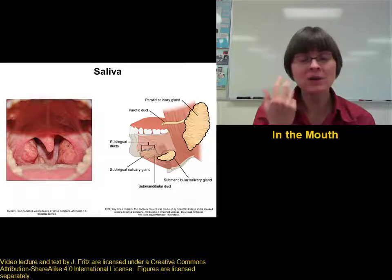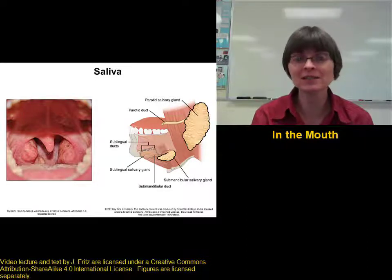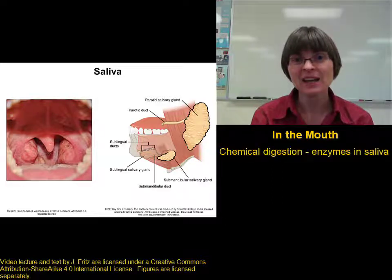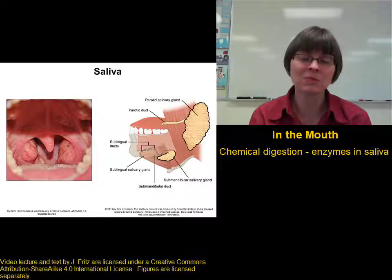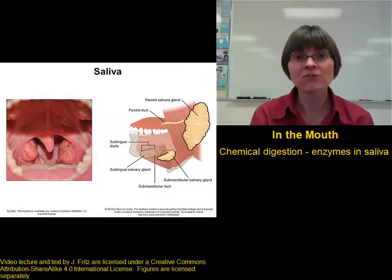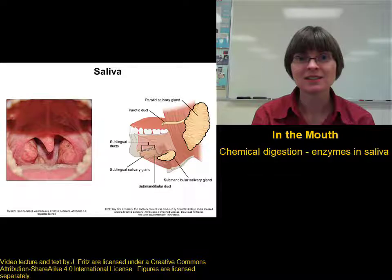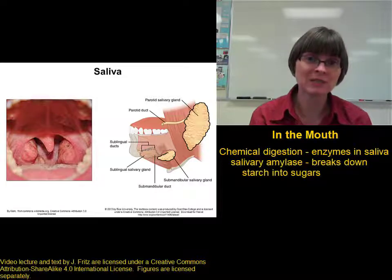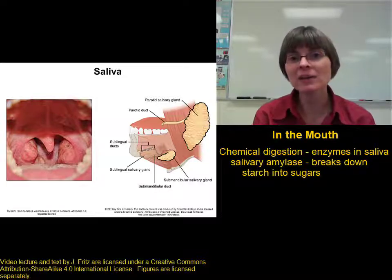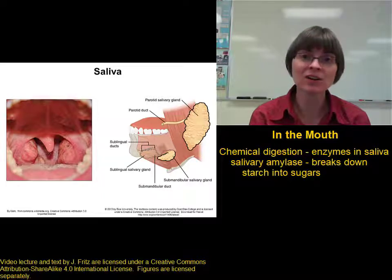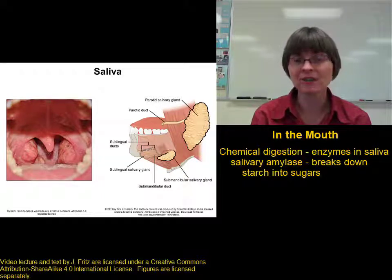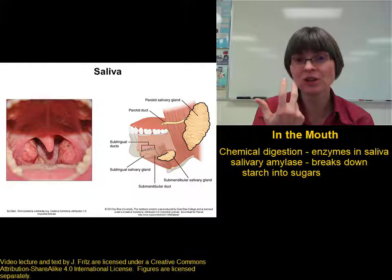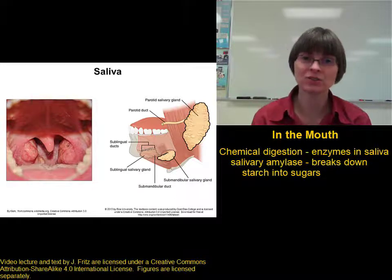If we go back up to the mouth, chemical digestion begins there due to the saliva. The saliva contains three different enzymes that begin the breakdown of molecules in the mouth. First, the saliva contains salivary amylase. The salivary part just means it's in the saliva, and amylase is an enzyme that breaks down starch into sugars. So salivary amylase will begin the digestion of starch in the mouth, breaking it down into sugars.